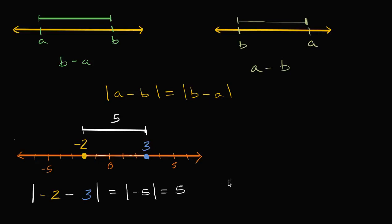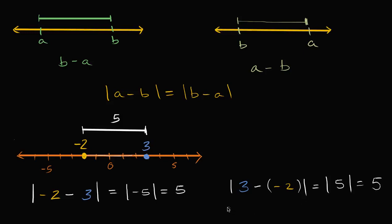Now what if I did it the other way around? What if I took three minus negative two? So it's going to be the absolute value of three minus, and in parentheses, negative two. If you subtract a smaller number from a larger number, you should get a positive value, so the absolute value sign here is just kind of extra — you don't really need it. This is three minus negative two, which is the same thing as three plus positive two, or five. So this is the absolute value of five, which of course equals five. So if you want the distance between two numbers, you subtract one from the other — it doesn't matter which order — be careful with the negative symbols, then take the absolute value, and that gives you the distance.